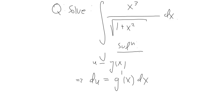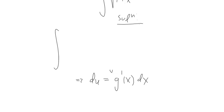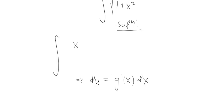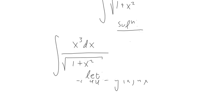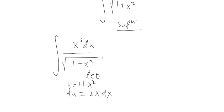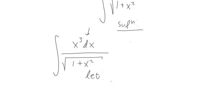Looking at the integral of X cubed over the square root of 1 plus X squared, if I let U equal to 1 plus X squared, my DU would be 2X dx. But there's no X dx factor anywhere in the integral of X cubed right now — so that's a problem. It looks like it's not U substitution, but it actually is, because there's no other way to integrate this.